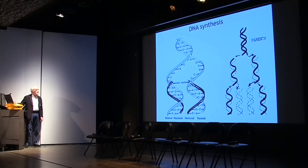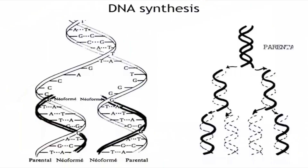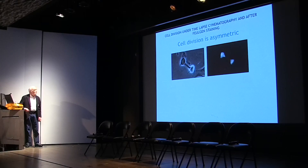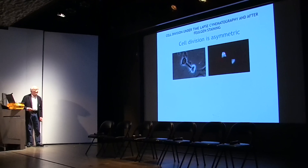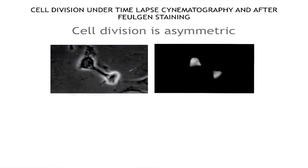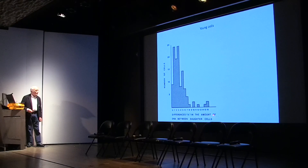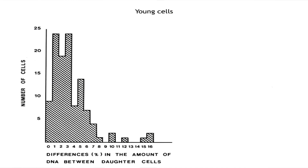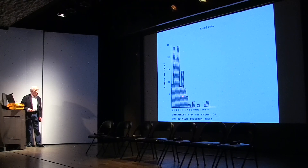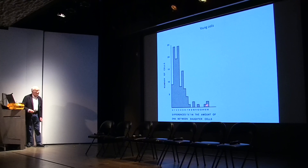Because of the concept of semi-conservative DNA synthesis, it was thought that the two sister cells after division are identical. We measured DNA content in sister cells and found that cell division is asymmetric. This shows the differences in the amount of DNA between daughter cells — in young cells, most differences stay below 8% to 9%, but one can find already differences as high as 16%.